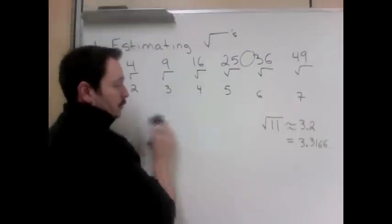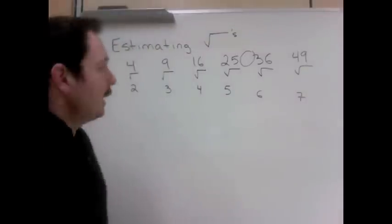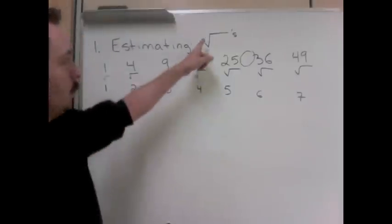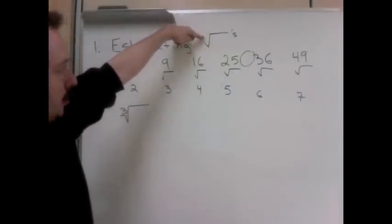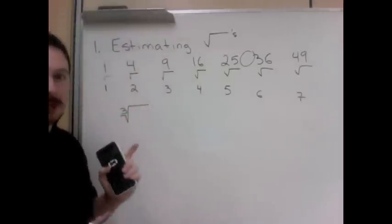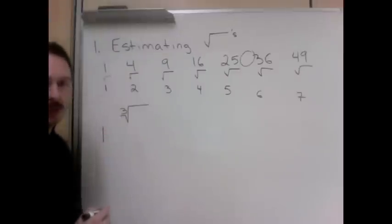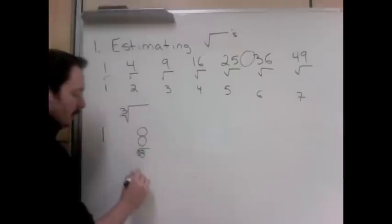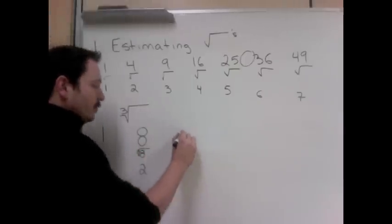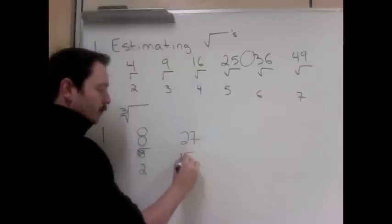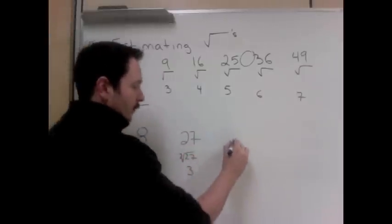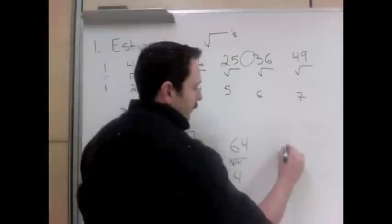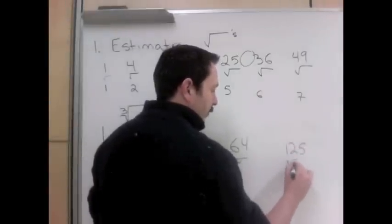Now what if we had a different type of root, a cube root of a number? Well, square roots we don't put the 2, it's just assumed. So for a cube root, what are all the cube roots? 1 times 1 times 1 is 1. 2 times 2 times 2 is 8, so the cube root of 8 is 2. 3 times 3 times 3 is 27, so the cube root of 27 is 3. 4 times 4 times 4 is 64, so the cube root of 64 is 4. 5 times 5 times 5 is 125, so the cube root of 125 is 5.